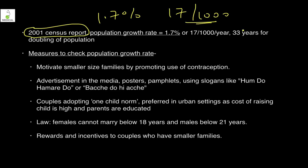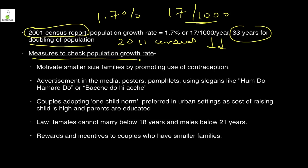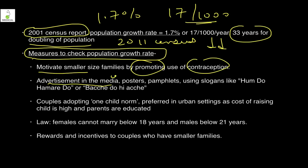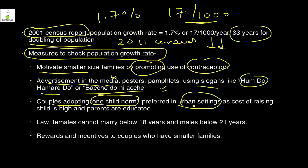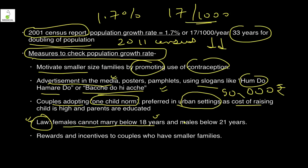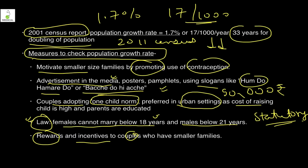Measures to check population growth: motivate smaller families, promote use of contraception, and use media advertisement with slogans like 'Hum Do Hamare Do' or 'Bacche Do Hi Achche.' Couples adopting a one-child norm is important, especially in urban settings where raising children is costly. Laws state females cannot marry below 18 and males below 21 years. Incentives and rewards are given to couples with smaller families — for example, those with more than two children may not be allowed to contest certain elections.